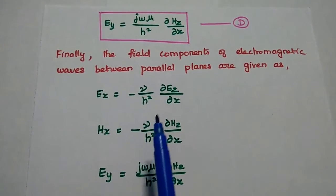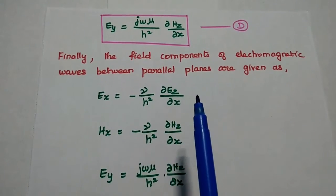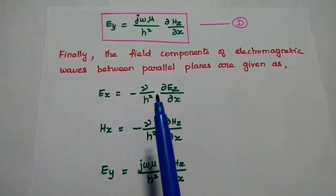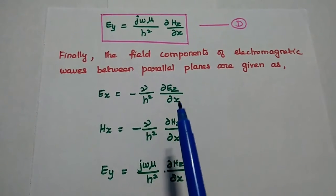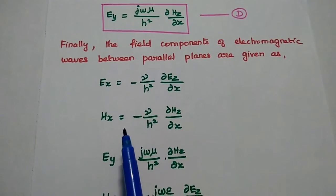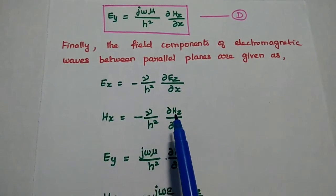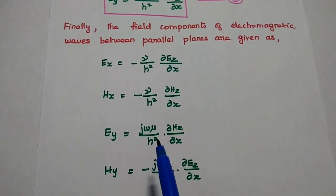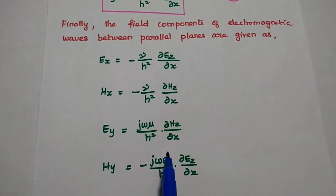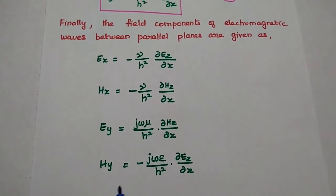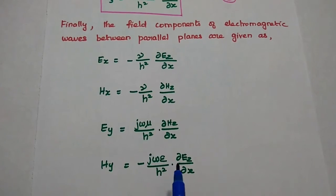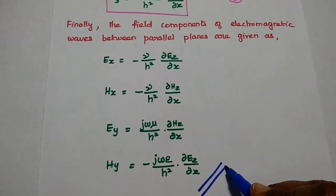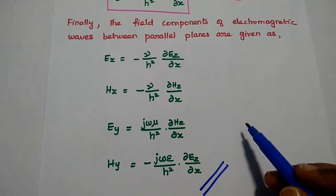Finally, the complete field components of electromagnetic waves between parallel planes are: Ex = −(γ/h²)·∂Ez/∂x; Hx = −(γ/h²)·∂Hz/∂x; Ey = (jωμ/h²)·∂Hz/∂x; Hy = −(jωε/h²)·∂Ez/∂x, where h² = γ² + ω²με. These are the field components for parallel plane wave propagation.